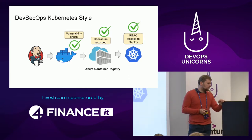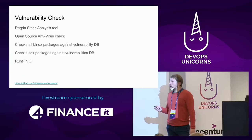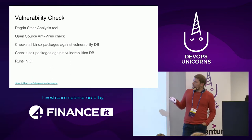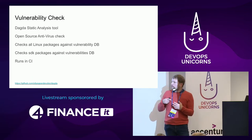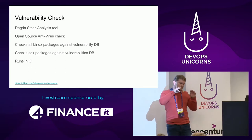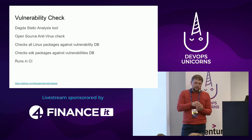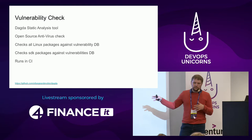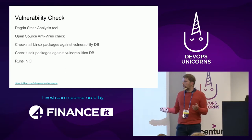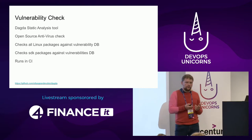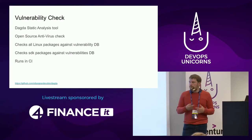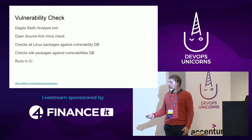For vulnerability checking, we found a tool called Dagda. It can be built into your CI process — it analyzes the operating system of your Docker image, checks all packages against a registered vulnerability database for both Linux packages and SDK packages like Python and Java, and also runs an open-source antivirus check for malware and trojans. It runs in CI perfectly.